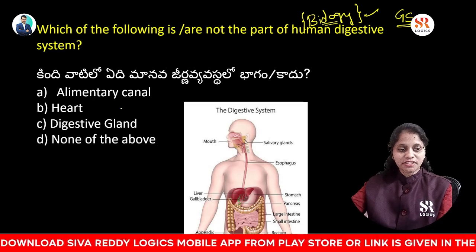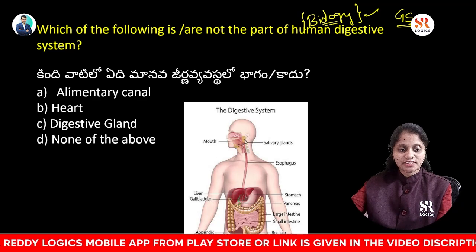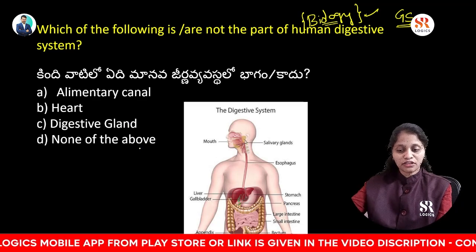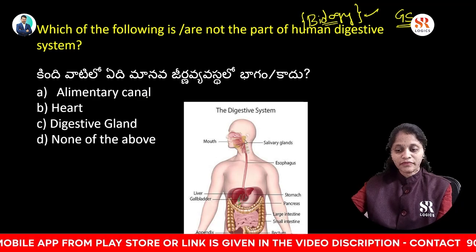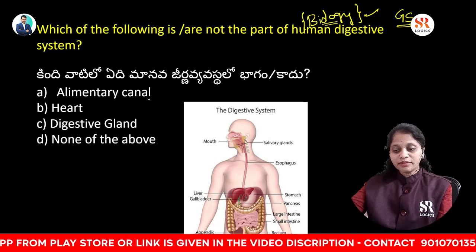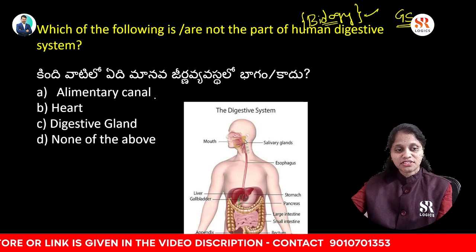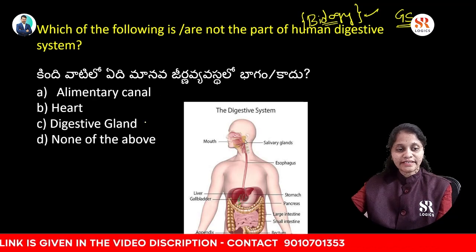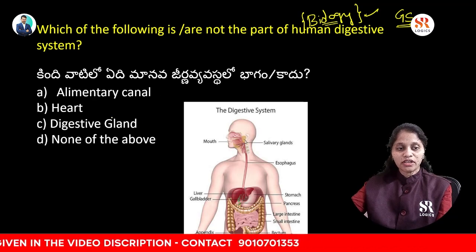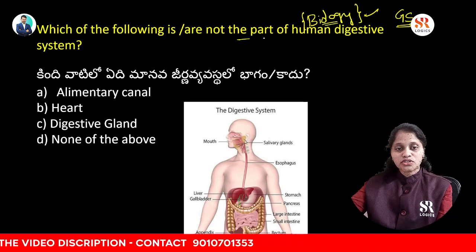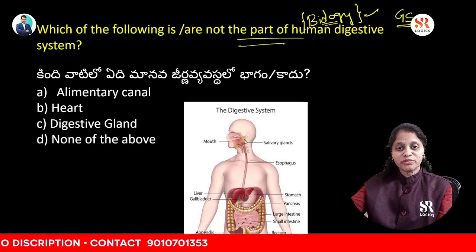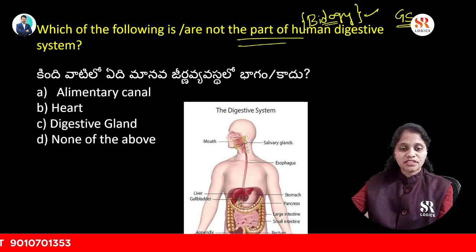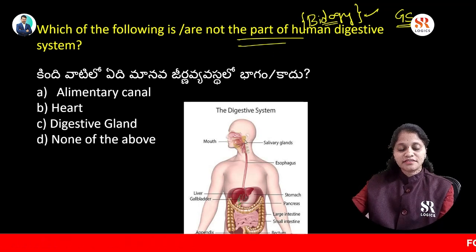Which is a part of the human digestive system? Options: alimentary canal, heart, digestive gland, none of the above. The digestive system includes: mouth, salivary glands, esophagus, stomach, liver, gallbladder, pancreas, large intestine, small intestine, appendix, rectum and anus.